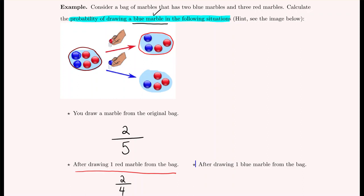This was our first example of conditional probability — calculating the probability of getting a blue marble after knowing one red marble was removed. In the next example, suppose we removed one blue marble from the original bag. The remaining bag has four marbles: one blue and three red. The probability of drawing a blue marble from this new bag is one out of four.